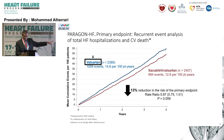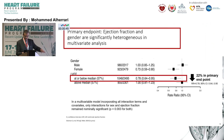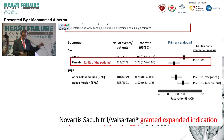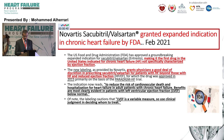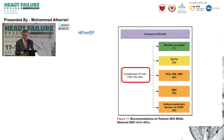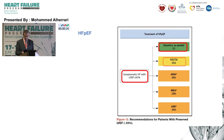For HFpEF, empagliflozin is the only trial showing reduction in mortality and morbidity in patients with ejection fraction above 40%, and has received FDA approval for use in heart failure regardless of ejection fraction. The American guideline for HFmrEF recommends all four drug classes — four pillars — but at a lower classification level. For HFmrEF, SGLT2 inhibitors are Class 2A — likely to become Class 1. ARNI, MRA, and ARB are Class 2B, but not beta blockers.